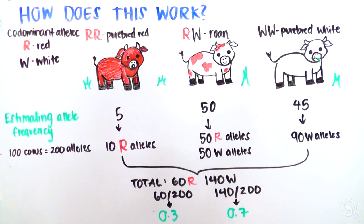We would then calculate that 60 alleles in a gene pool of 200, 60 over 200, equals an R allele frequency of 0.3. With 140 W alleles in a pool of 200 alleles, 140 over 200, the frequency of W is 0.7. Notice that the total of the frequency of R plus the frequency of W equal 1.